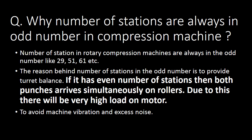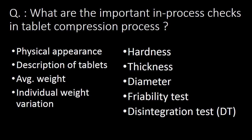Removal of entrapped air helps to achieve the desired hardness without capping or lamination. Next important question: why are the number of stations always an odd number in a tablet compression machine? The number of stations in a rotary compression machine are always odd, like 29, 51, 61, etc. The reason is to provide turret balance — if there were an even number of stations, both punches would arrive simultaneously on the rollers, causing a high load on the motor.